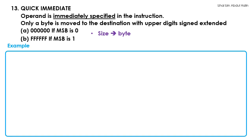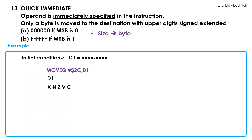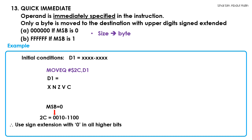The initial condition shows that D1's value is unknown for now. MOVEQ 2C, D1 is our instruction. Since the operand is 2C, we will check its MSB when it is written in binary format. The MSB is 0, thus the data moved into D1 is 0000002C — it's a long word representation of 2C. The status register is updated as X0000 because 2C is a positive non-zero number.